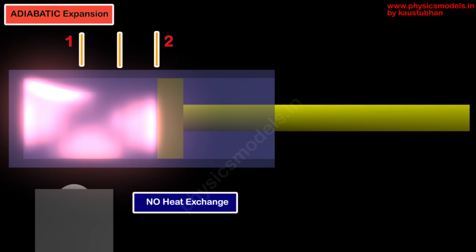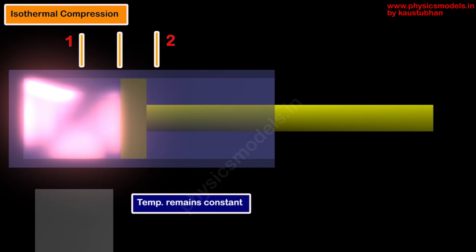The piston now has moved out to its extreme position marked as 2. The second step of expansion is called adiabatic expansion, which means there was no heat exchange to the gas or from the gas to the surroundings. Note the pressure has decreased and the volume has increased.